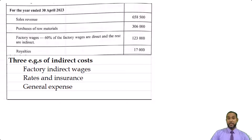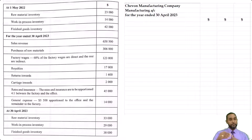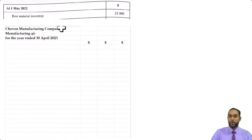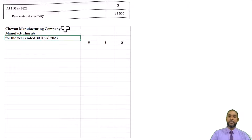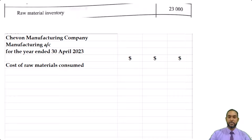The next part they want us to do is the full manufacturing account. If you need to check out that tutorial before you check out the solution, go to the description and click on that. I do it step by step — I don't give the whole format at one time. I build it up from just one or two items and then piece by piece. It makes it a lot more digestible. So let's take a look at this question solution. The header properly: Chevron Manufacturing, manufacturing account for the year ended 30th April 2023. We're going to start with the direct costs and the raw materials — cost of raw materials consumed.